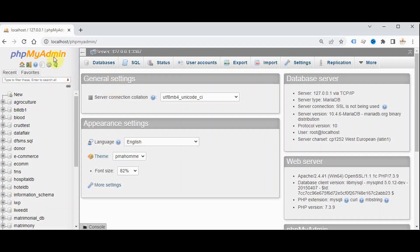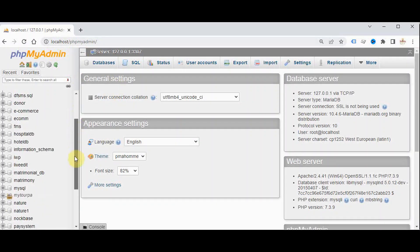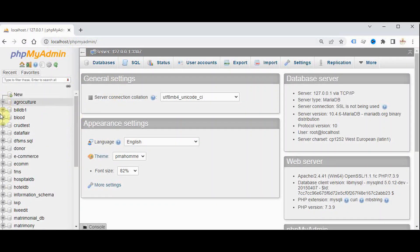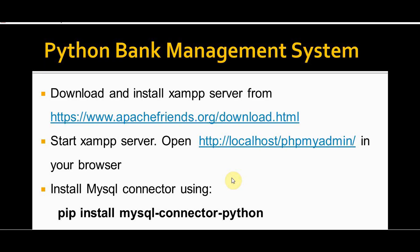Then open localhost/phpMyAdmin in your browser. When you open this, you can see the databases in your MySQL server. Next, we need to install the MySQL connector using the statement from your command prompt: pip install mysql-connector-python.